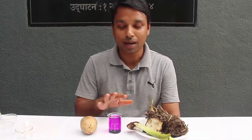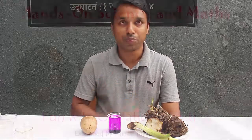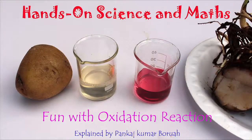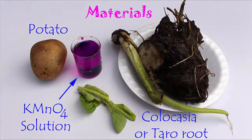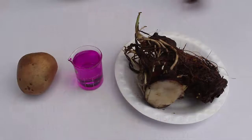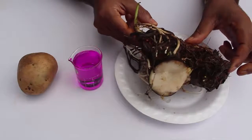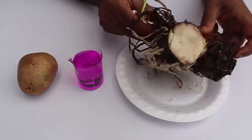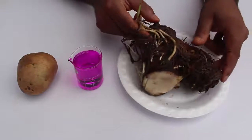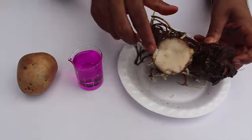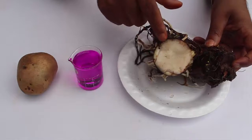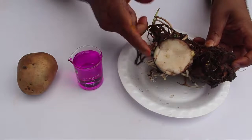Let us do some experiment in a funny manner and see what happens. The materials required are potato, colocasia, and their extracts, as we can see in this picture. This is a root of the colocasia plant — a very beautiful and big one. I have taken out a portion of the colocasia root and the peels were removed.